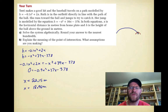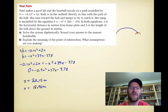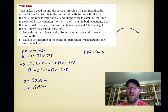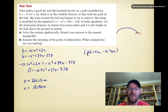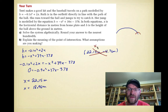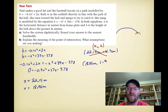Ruth can only catch the ball once, so we need to determine which answer is correct. Plugging both into the first equation: at x = 22.15, the height is approximately −4.76 meters, which is impossible — you can't have a negative height — so that answer is discarded. At x = 18.96, the height is approximately 1.97 meters, which makes sense.